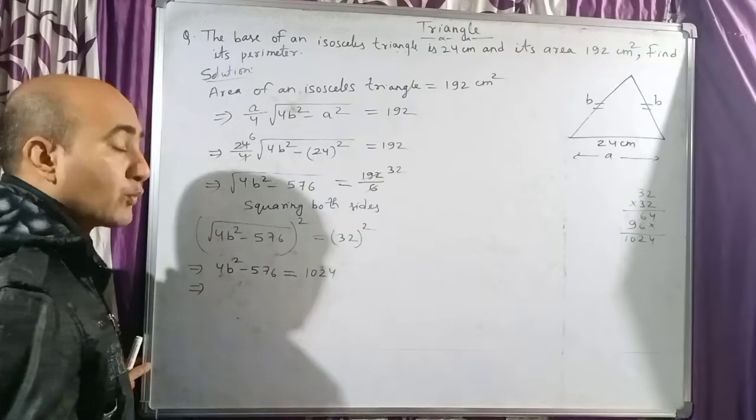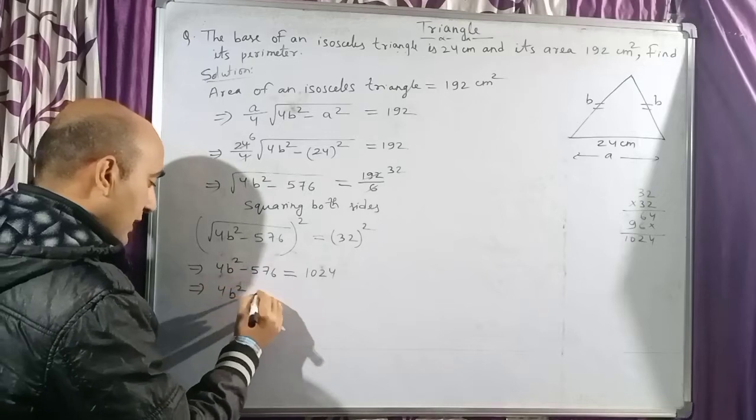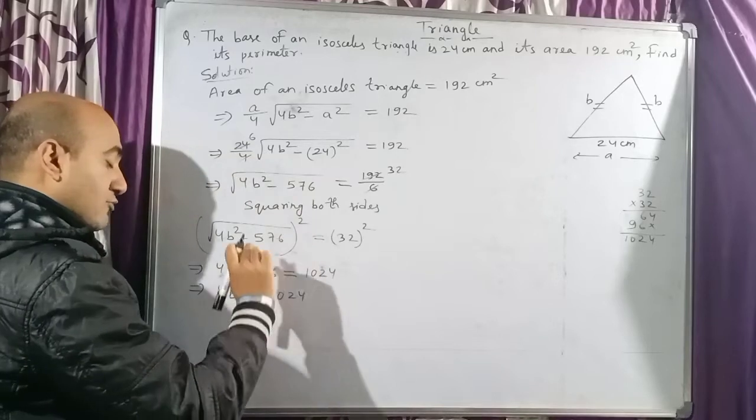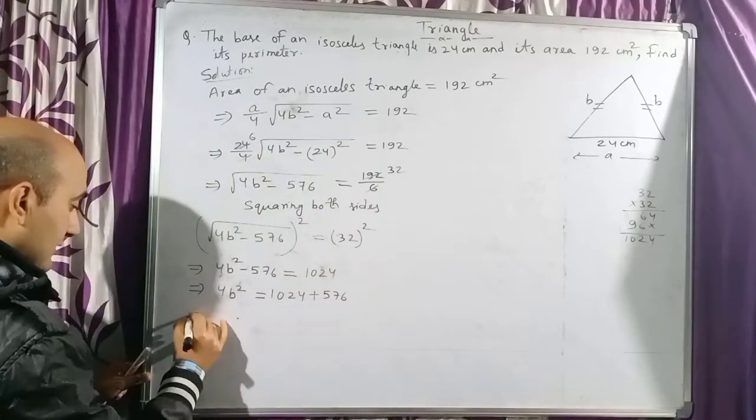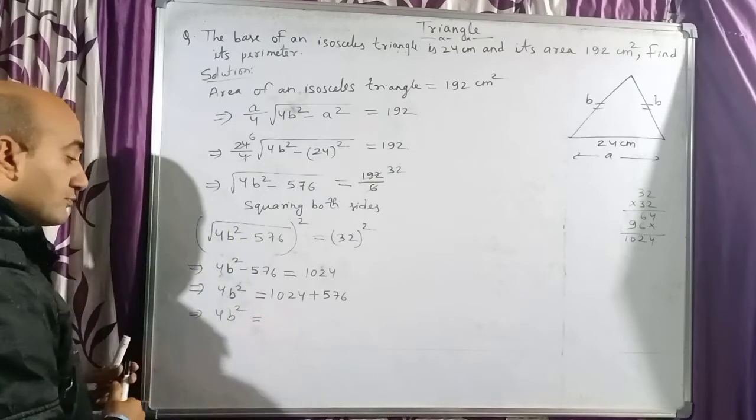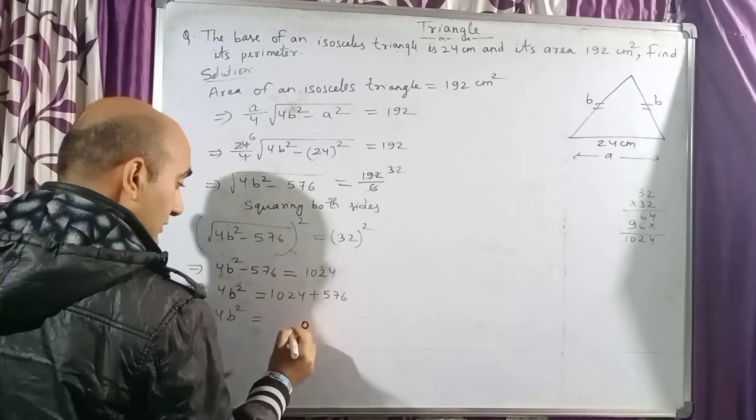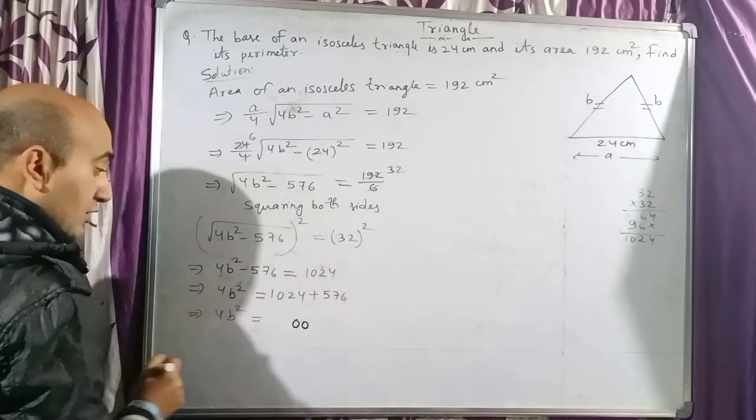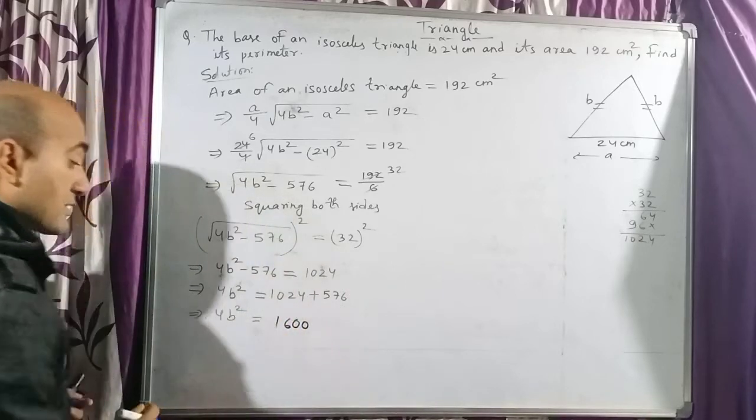Next, as you all know, we are trying to find the value of b. So keep 4b² here and write 1024, and take this -576 to that side where it will become +576. Next, 4b² = 1024 + 576. Children, add these two numbers: you will get 1600.